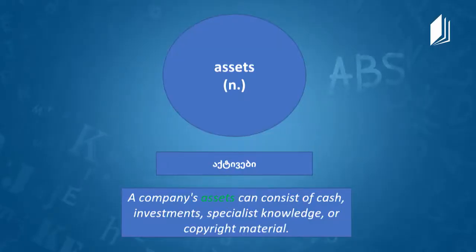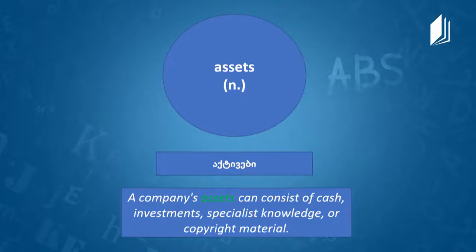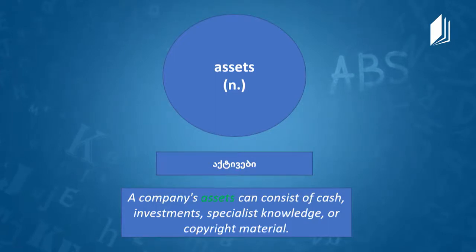The next word is assets. Assets is a noun, and in Georgian it is 'Aktivebi.' Assets are something valuable belonging to a person or a business that can be used to pay debts — the property of the company which can be sold in case of difficulty. Example: 'A company's assets can consist of cash, investments, specialist knowledge, or copyright material.' Even knowledge can be an asset!